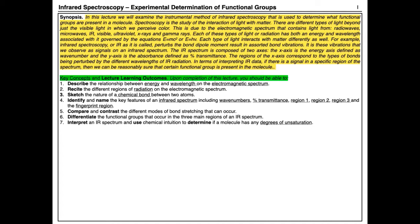Spectroscopy is the study of the interaction of light with matter. There are different types of light beyond just the visible light which we perceive as color. This is due to the electromagnetic spectrum that contains light from radio waves, microwaves, infrared, visible, ultraviolet, X-rays, and gamma rays. Each of these types of light or radiation has both an energy and wavelength associated with it, governed by the equations E = mc² or E = hν. Each type of light interacts with matter differently as well.